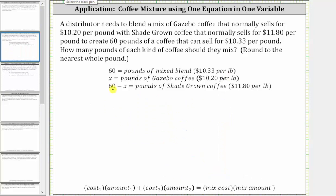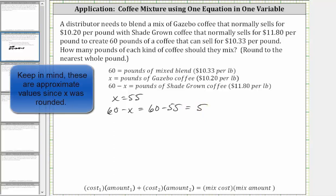Using x equals 55, we also need to find 60 minus x to get the pounds of shade-grown coffee. 60 minus 55 equals 5. So they should use 55 pounds of gazebo coffee and 5 pounds of shade-grown coffee to make 60 pounds of a coffee that will sell for $10.33 per pound.